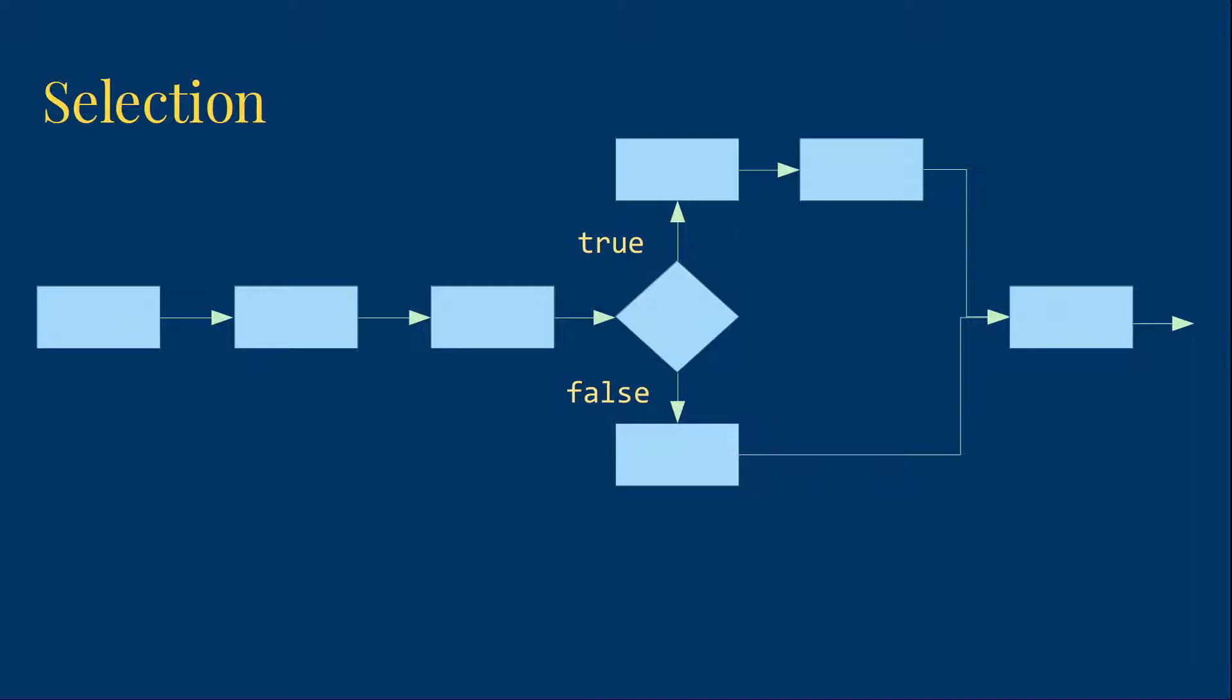Now, it could be that instead of the true branch, when we get to that decision point, we're going to find that things are false. In that case, we'll go down and do the statement on that branch. There could be any number of statements on either branch. And then we'll join up and continue with our sequential processing.